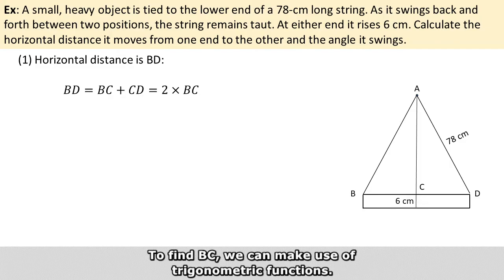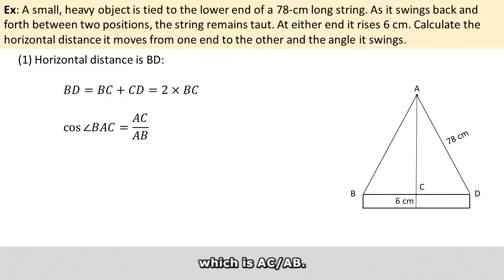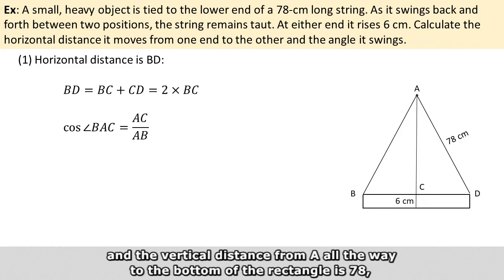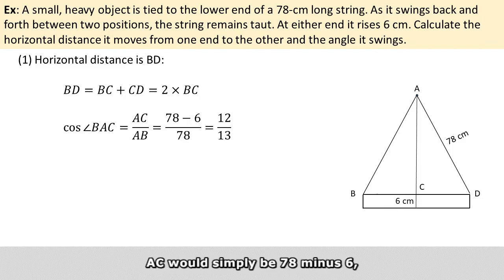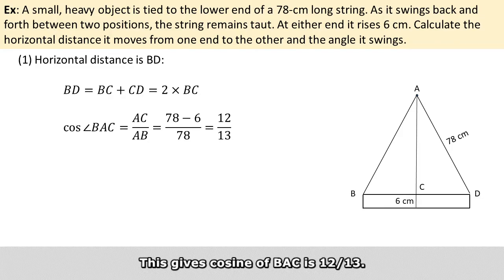So to find BC, we can make use of the trigonometric functions. There is enough information to determine the cosine of the angle BAC, which is AC over AB. Since we know that the width of the rectangle is 6, and the vertical distance from A all the way to the bottom of the rectangle is 78, AC will simply be 78 minus 6, and AB is 78. This gives cosine of BAC equals 12 over 13.